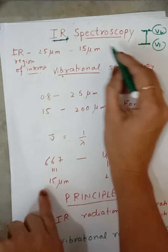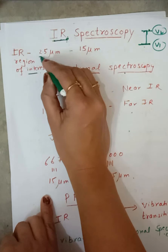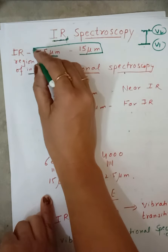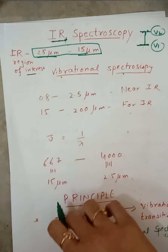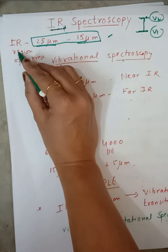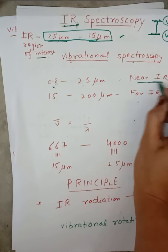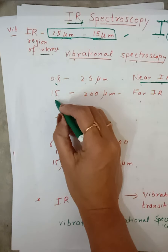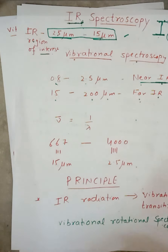Now coming to IR radiations. The IR region of interest is 2.5 micrometer to 15 micrometer — this will be our area of interest for vibrational spectroscopy. The region below 2.5, from 0.8 to 2.5 micrometer, is called the near infrared region, and from 15 to 200 micrometer is called the far infrared region.